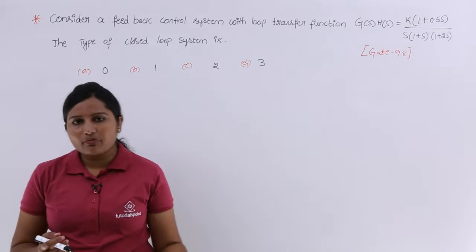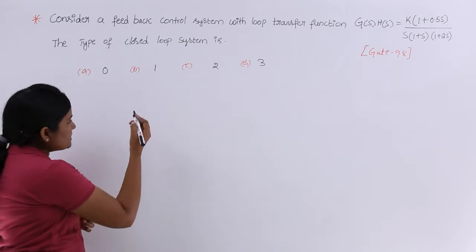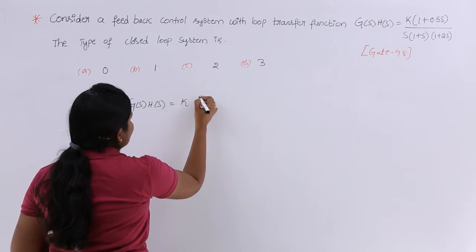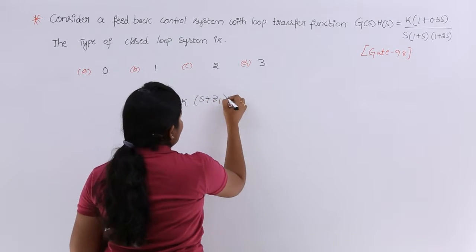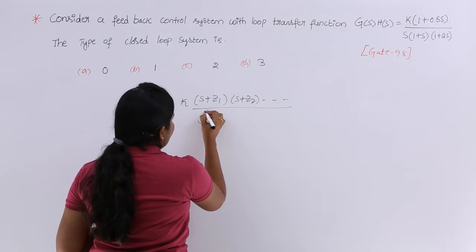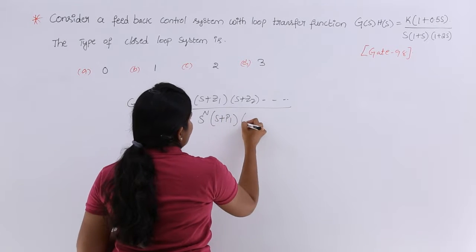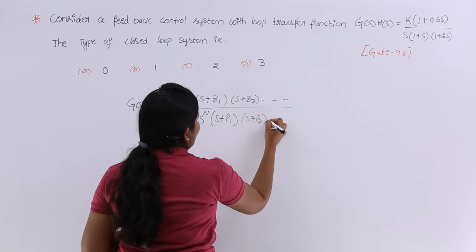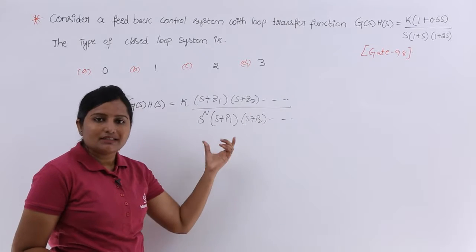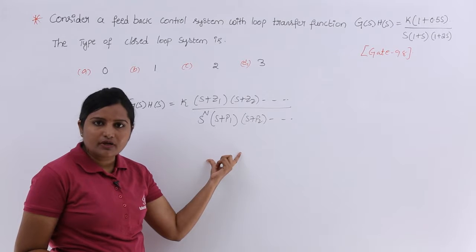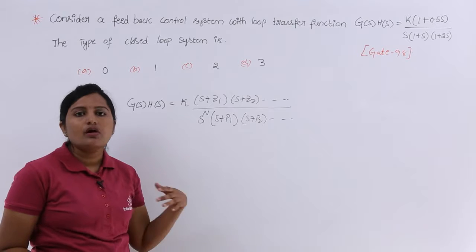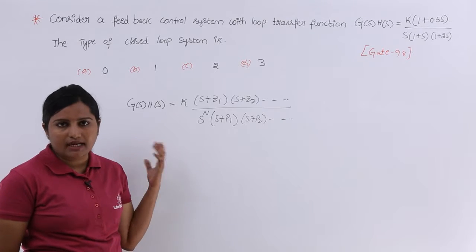In that topic I already gave this equation. For example, if G(s)·H(s) is in the form of K·(s+z1)(s+z2)... divided by s^n·(s+p1)(s+p2)..., the denominator of this loop transfer function will define the type number of the system — whether it is type 0, type 1, type 2, or type 3.